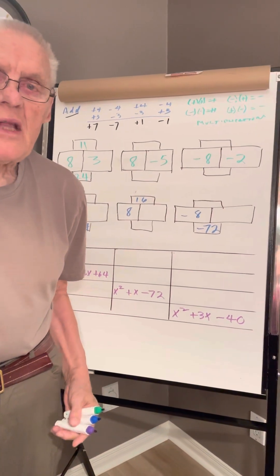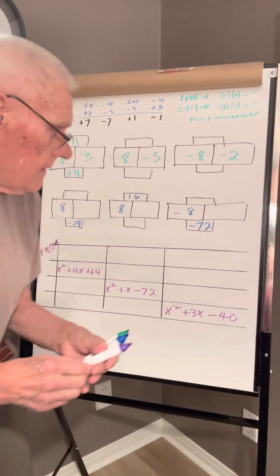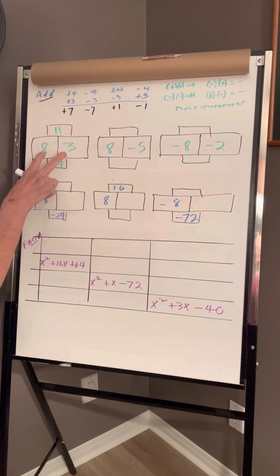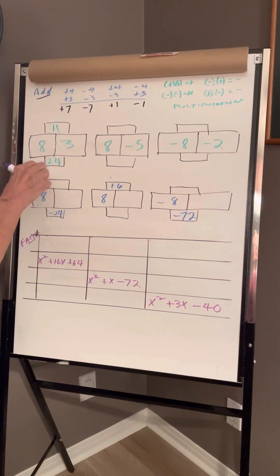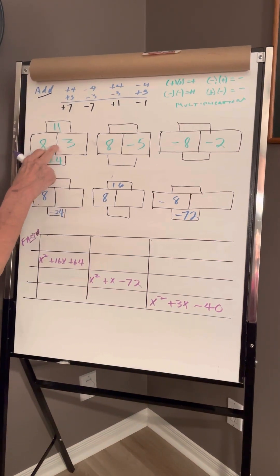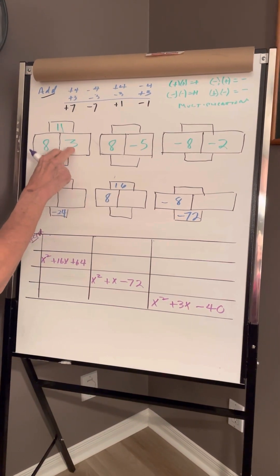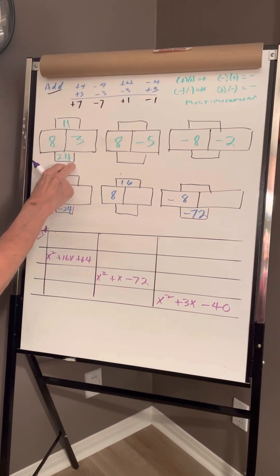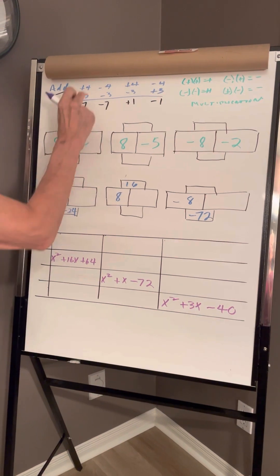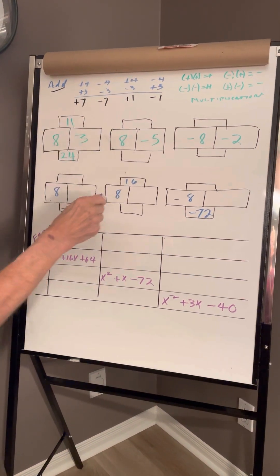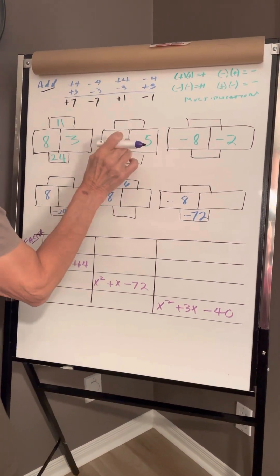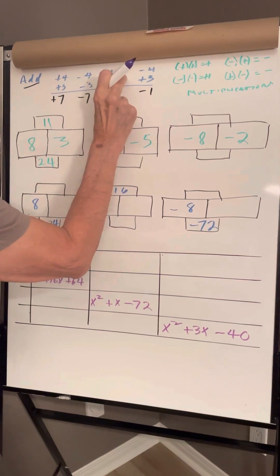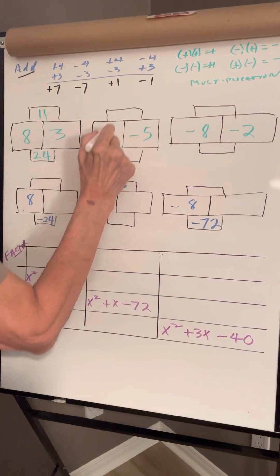The 8 times table. I do the first one. 8 plus 3 is 11, and 8 times 3 is 24. Signs are the same, add. This one here, the signs are different. Take the difference.